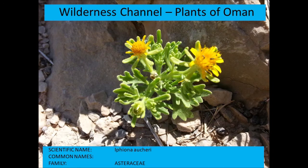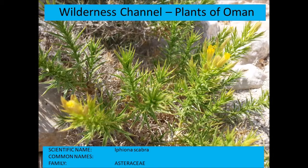Iphiona or Kerria — one of many yellow-flowered daisy species. Here's another: Iphiona scabra, which is more spiny.